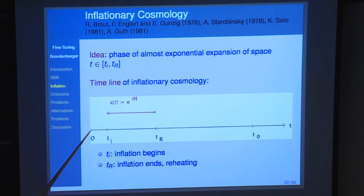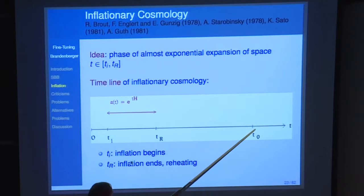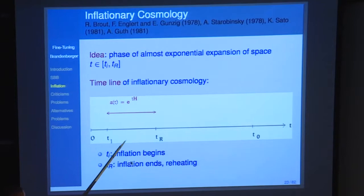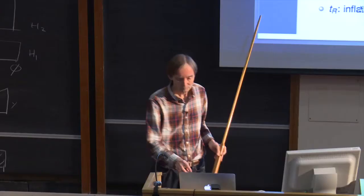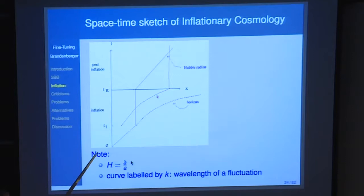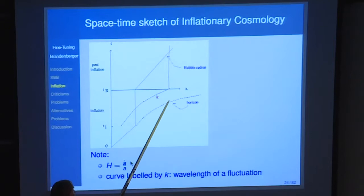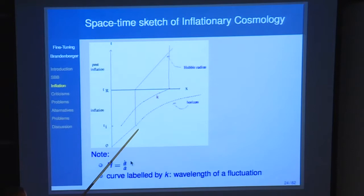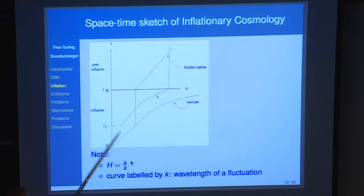Inflation is the idea that the timeline of Big Bang cosmology is modified by introducing a period of exponential expansion of space. Inflation begins at some time, ends at some time. In the corresponding space-time diagram — time and space in physical distance — the horizon expands linearly in the pre-inflation era. Since space expands exponentially during inflation, the horizon expands exponentially, so the horizon is exponentially larger compared to standard Big Bang cosmology.